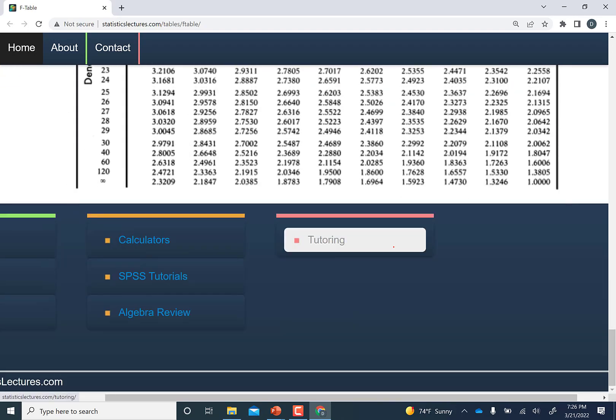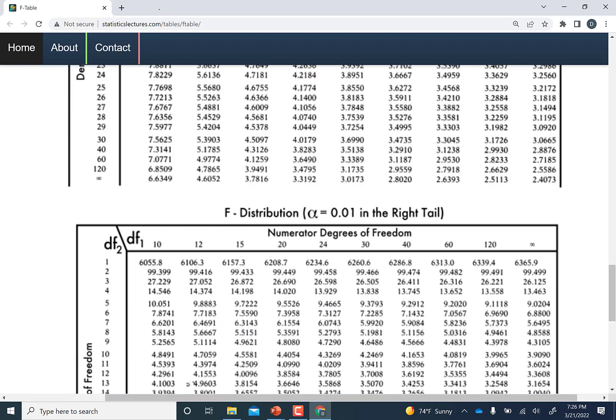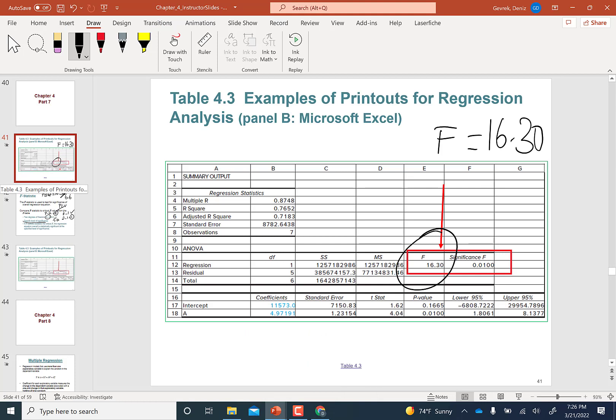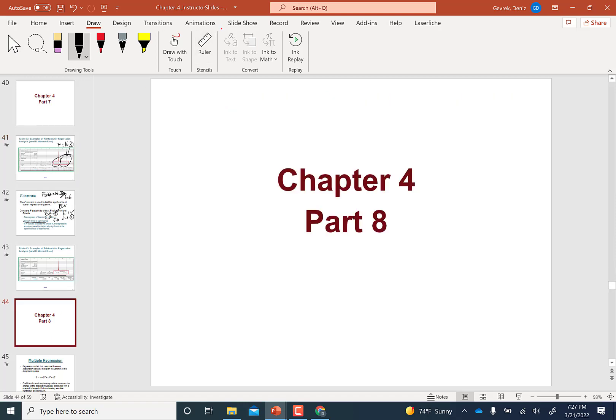You also have 10 percent levels. With this you can either use an F table, but simply you can just look at the significance of the F statistic. I'll see you in part eight.